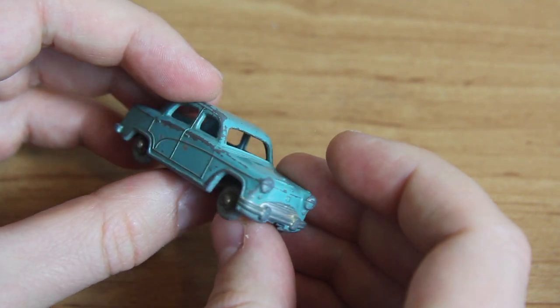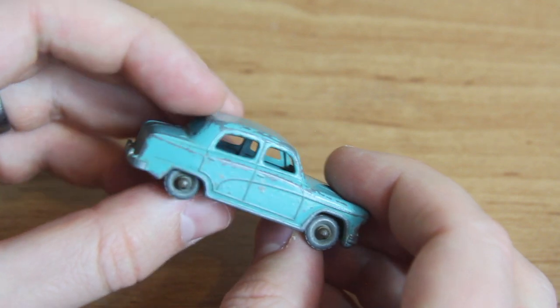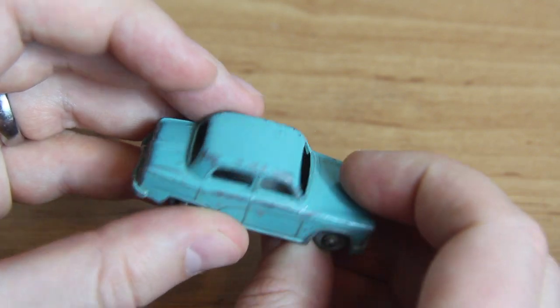Hello and welcome to Diecast Restos. I'm Jason and this is the 36A Austin A50.